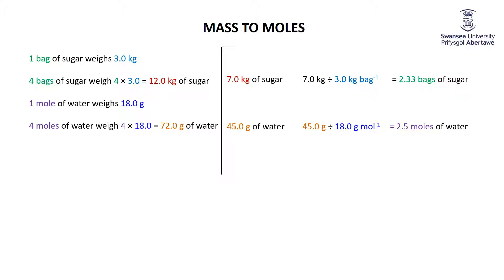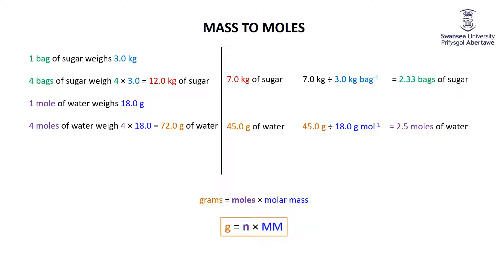To give you a little equation for this: the total number of grams equals the number of moles multiplied by the molar mass. In symbolic form: g (for grams) equals n (for moles) times MM (molar mass) — not a candy wrapper, but molar mass.